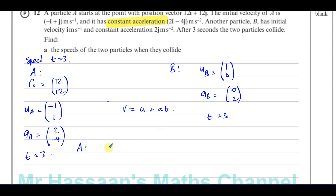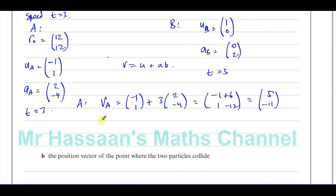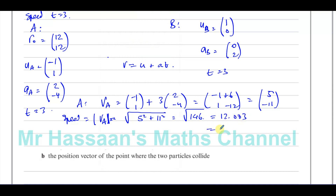For particle A, the velocity after three seconds is its initial velocity plus acceleration times time: (−1, 1) + 3 × (2, −4). That gives (−1 + 6, 1 − 12), which equals (5, −11). So the velocity of A at collision is (5, −11). The speed of A is the magnitude of this velocity, which is the square root of 5² plus 11², equal to the square root of 25 plus 121, which is the square root of 146.